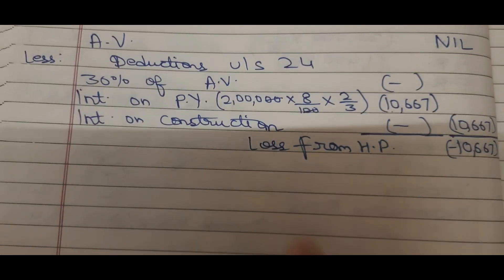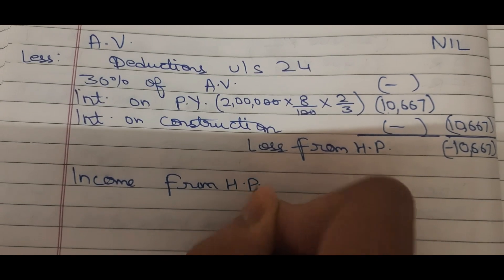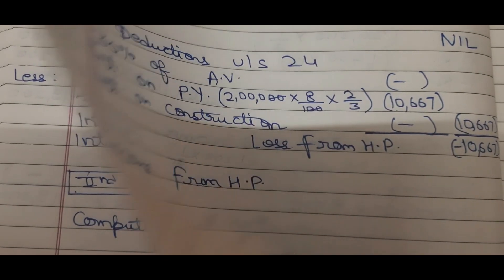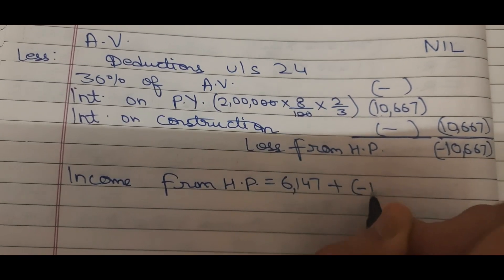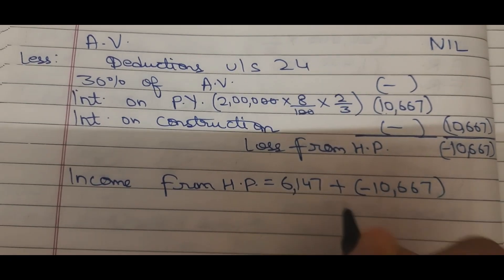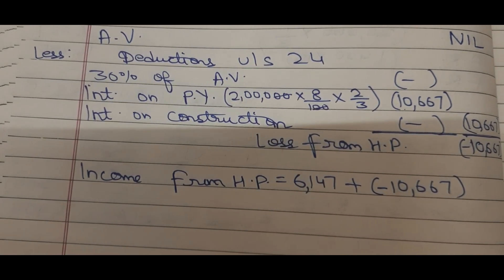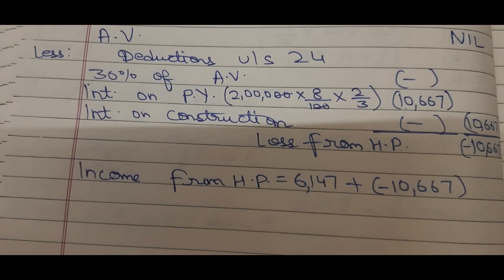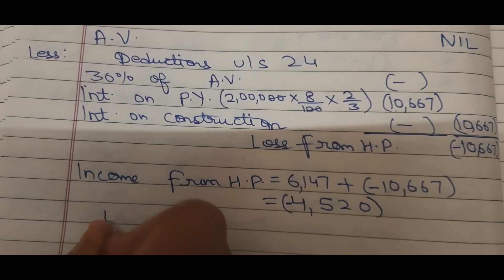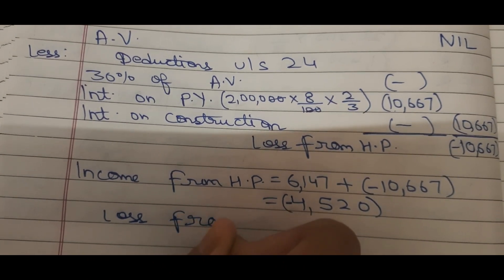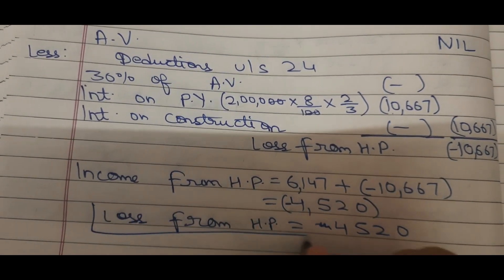Now let's calculate combined income from house property. From House 1 (let-out), income is Rs. 6,147. From House 2 (self-occupied), loss is Rs. 10,667. Net: Rs. 6,147 − Rs. 10,667 = minus Rs. 4,520. Total loss from house property is Rs. 4,520.